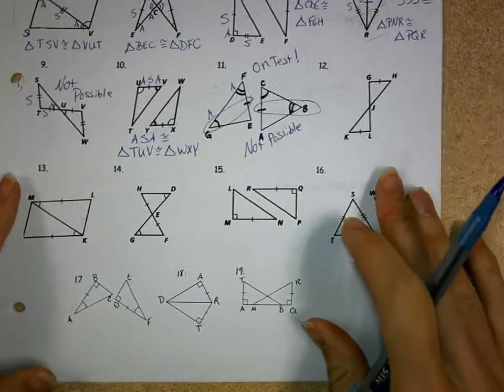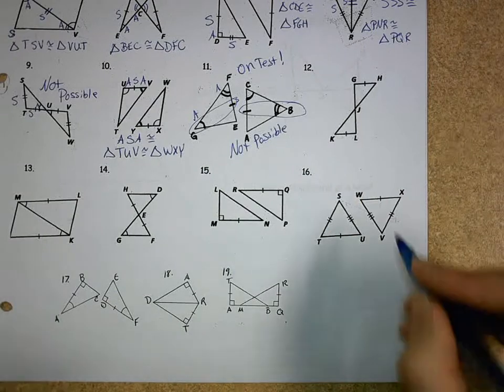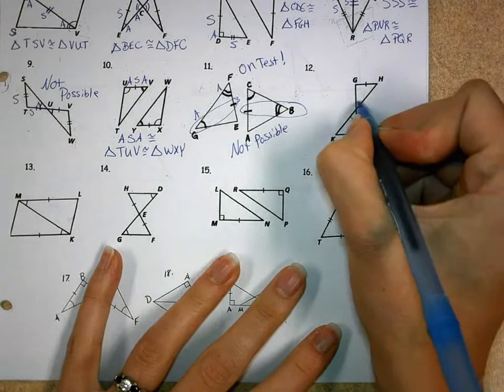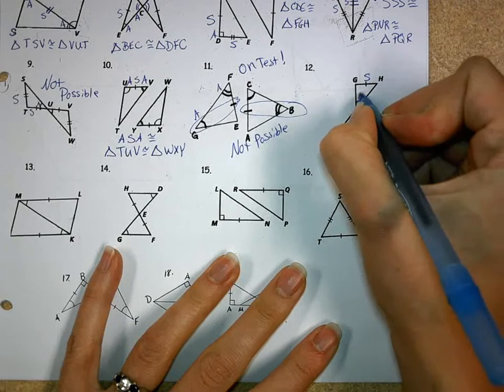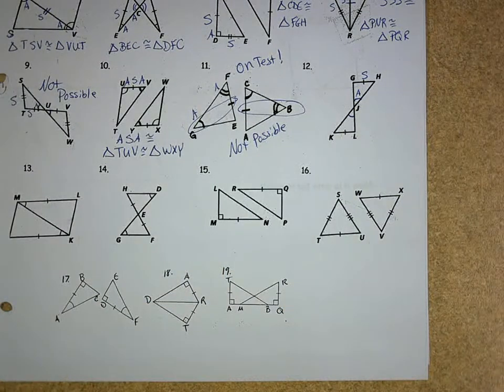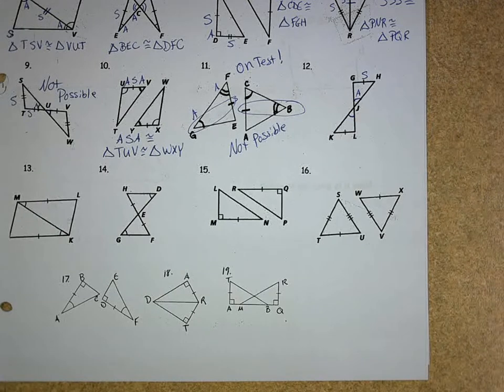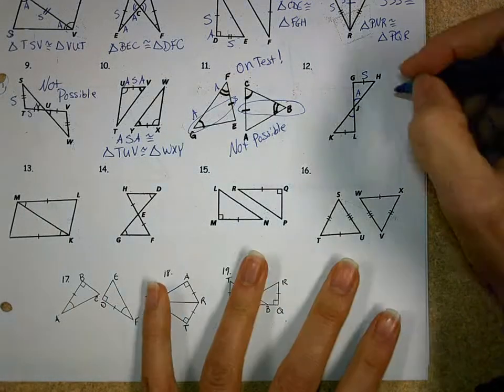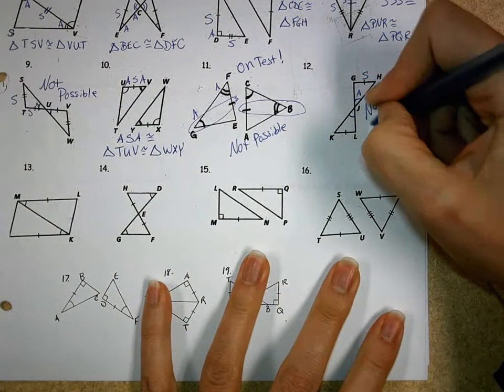Now, let's look at number 12. Again, I'm looking for things that are congruent that aren't marked, and I have my vertical angles. Well, I have a side, and I have an angle. Do I know anything else about more angles or more sides? No, I don't. So, this would be not possible.